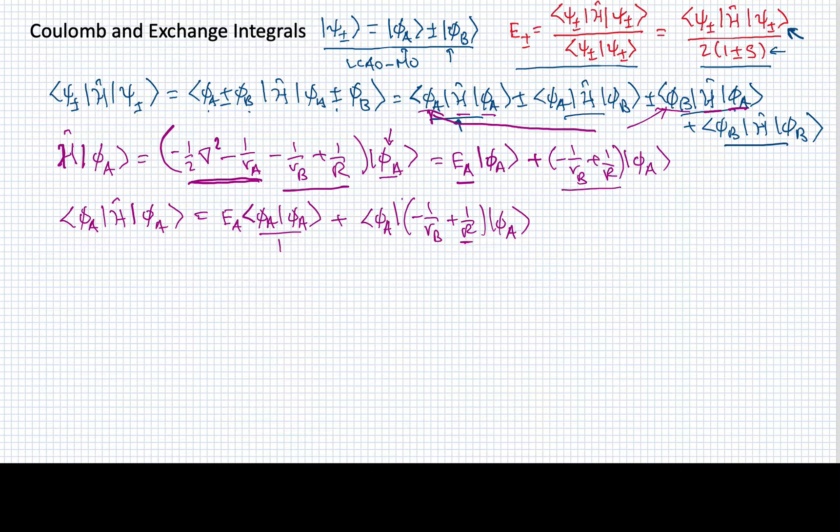Then I'm going to have phi A with this other set of variables, phi A. Now remember we're treating R as though it's constant. The two protons are not moving relative to one another. So I'm going to get one term that's just this constant times the inner product of phi A and phi A. So I can pull that out and write E sub A plus one over R plus this other thing, phi A times negative one over R B phi A.